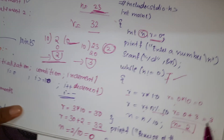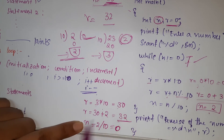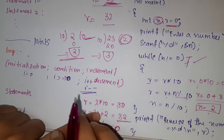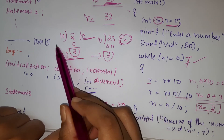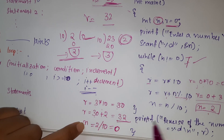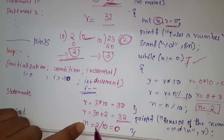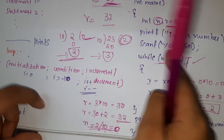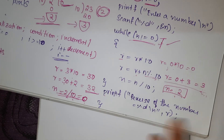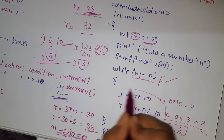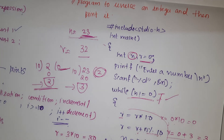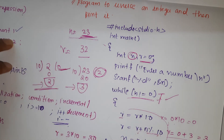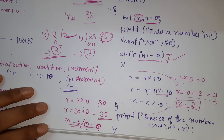Again: current r is 3, so 3 into 10 equals 30, then r equals 30 plus n percent 10. Since n is 2, we get 2, so r equals 32. Current n is 2 divided by 10 equals 0 — loop exits. This is the condition to remember for reversing an integer. If you get 23 it prints 32. You can apply this to three or four digit numbers — same logic applies, just gets lengthier. Thank you for watching.